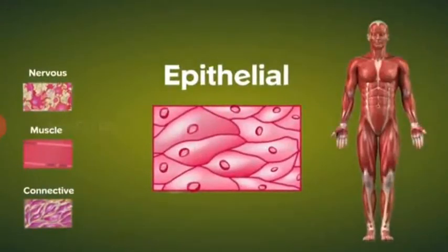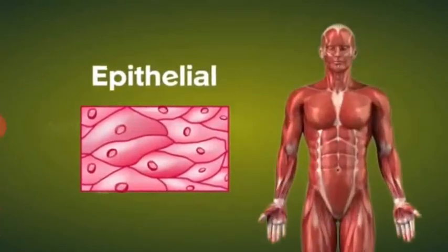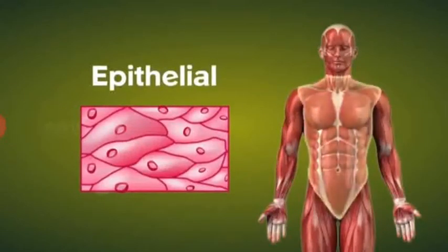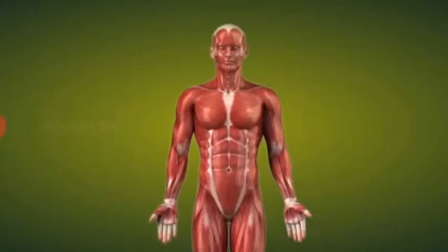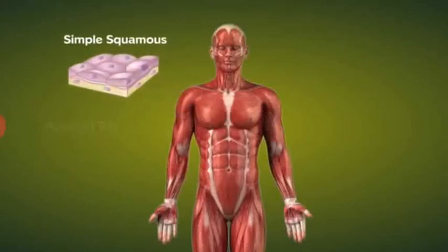Let's first look at the epithelial tissue. This tissue covers and protects the internal and external surfaces of the animal body.